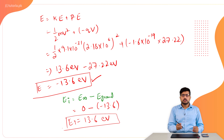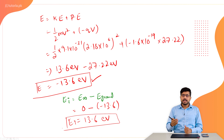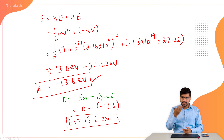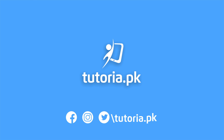So we found the electric potential, then the total energy which is the sum of kinetic plus potential energy, and finally the ionization energy.